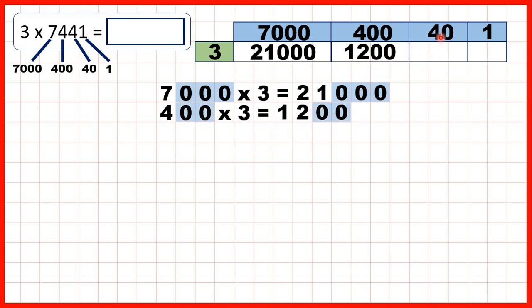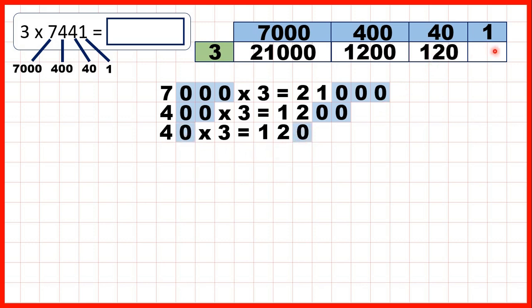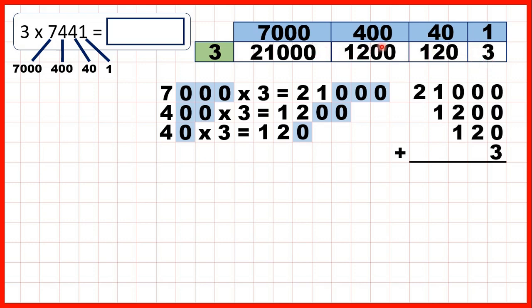Here we need 40 times 3, so that's 120 — 4 times 3 is 12 and then we need 1 end zero. And here we need 1 times 3, so that's 3. Again, all we need to do now is add up the numbers that we've written on our grid. And when we do that we get our answer 22,323.